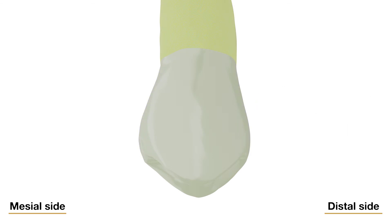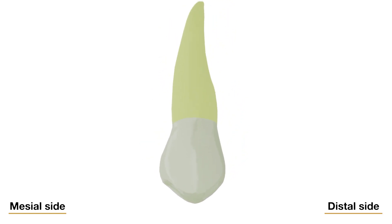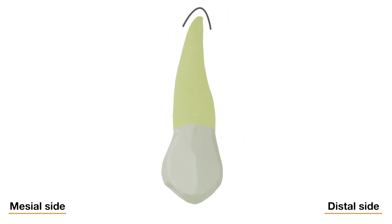Because the lingual cusp is not as long as the buccal cusp, the tips of both cusps with their mesial and distal slopes are seen from the lingual aspect. The crest of the smooth lingual portion that terminates at the tip of the lingual cusp is called the lingual ridge. The apex of the lingual root tends to be more blunt when compared to the buccal root apex.